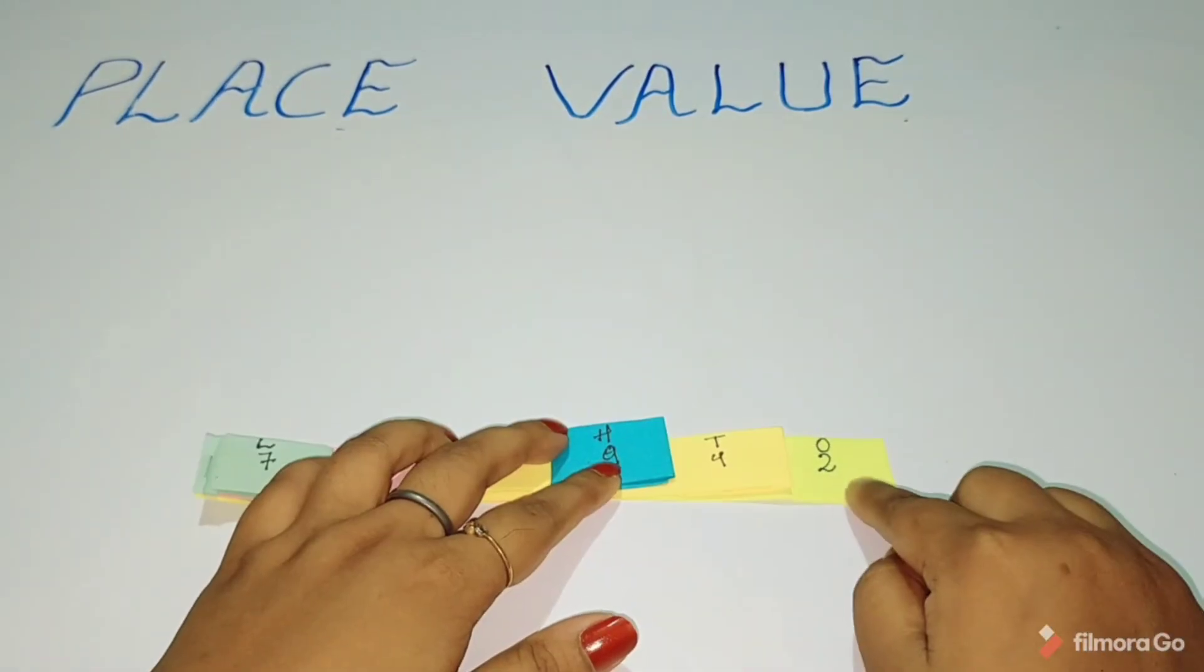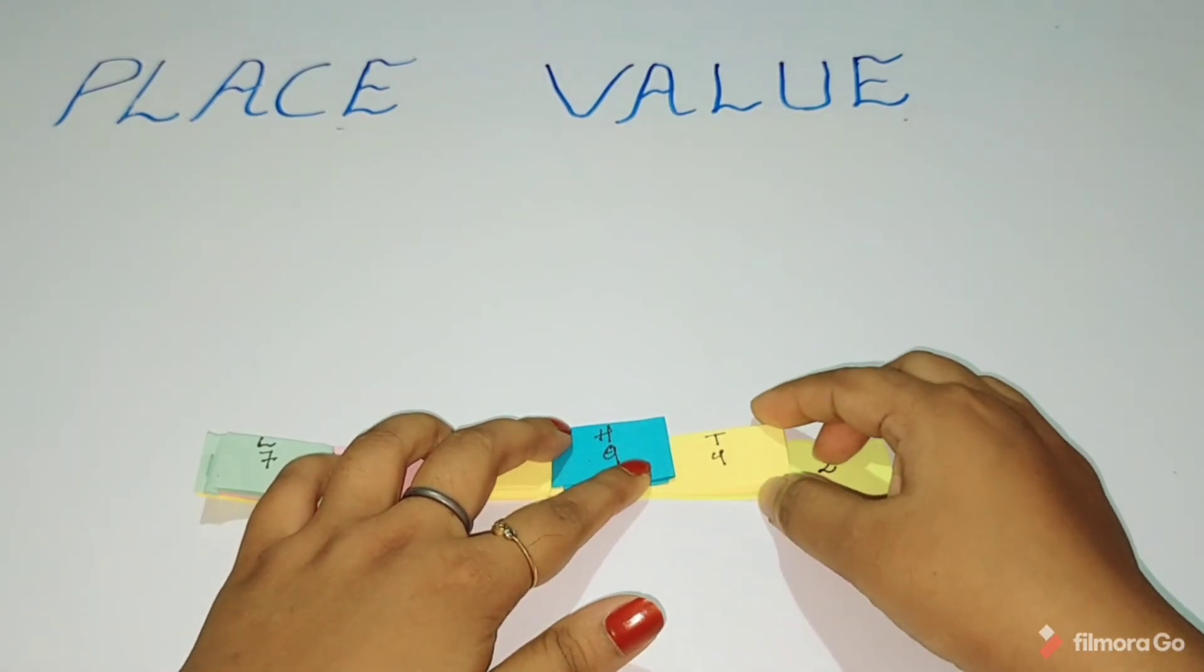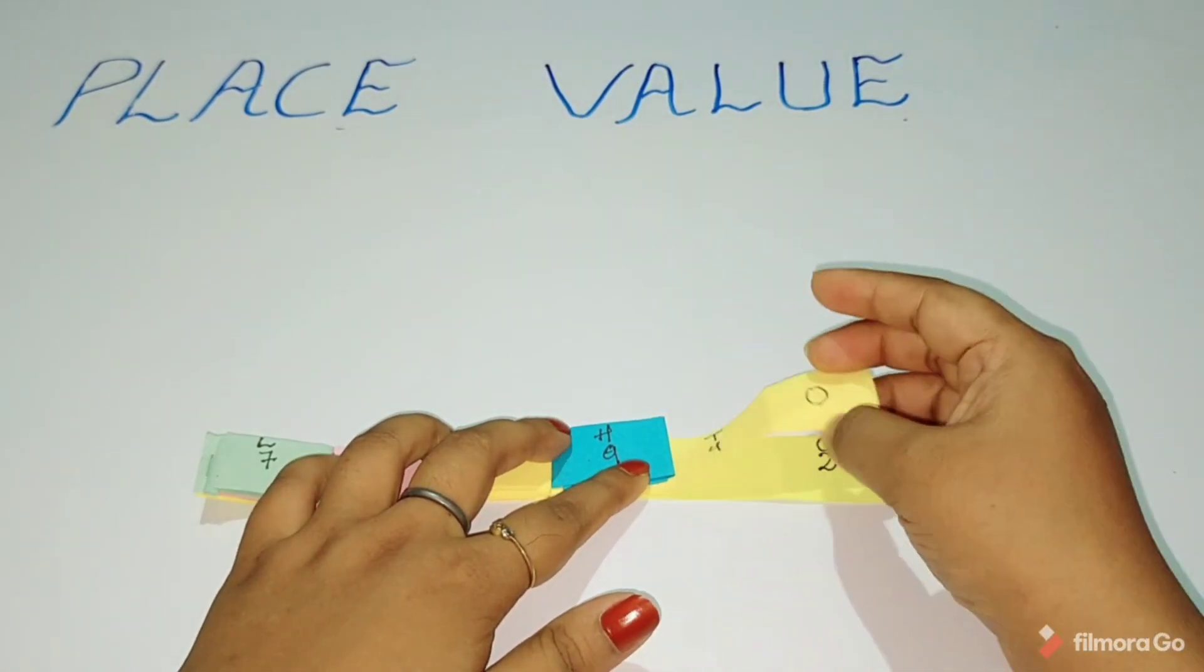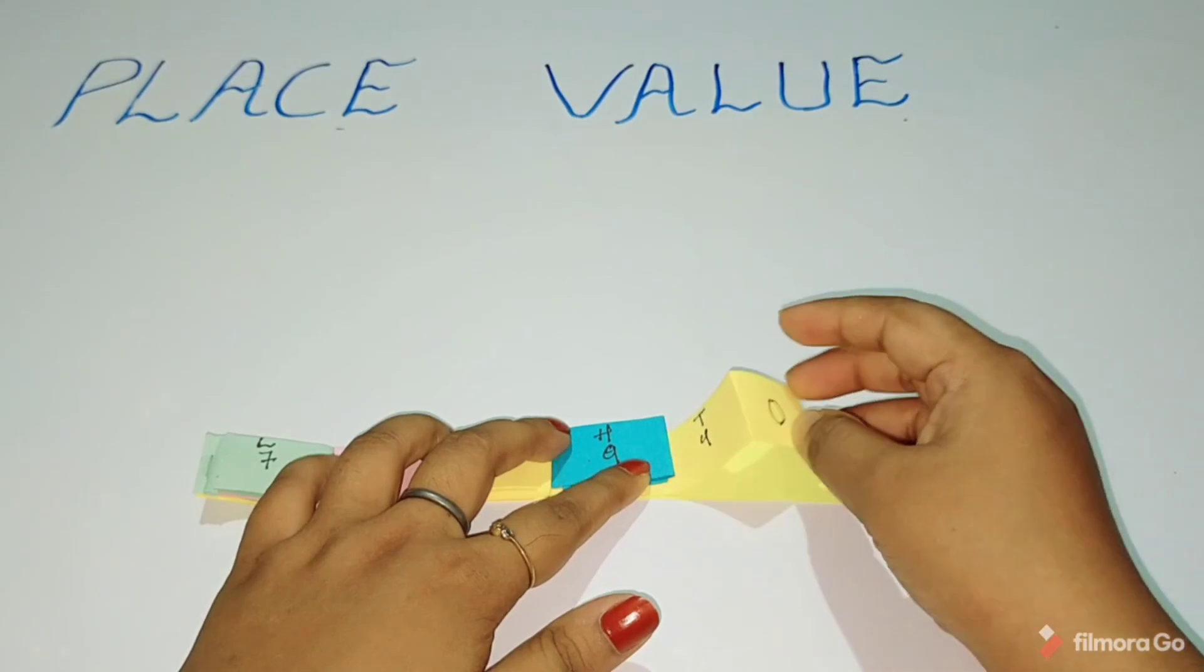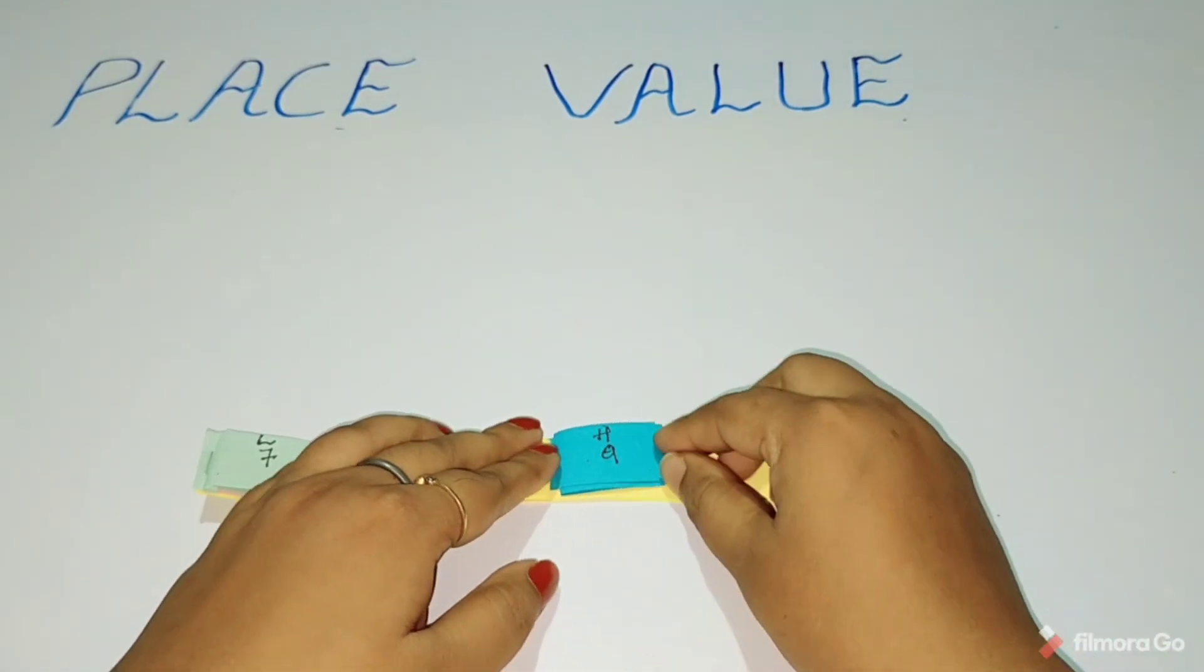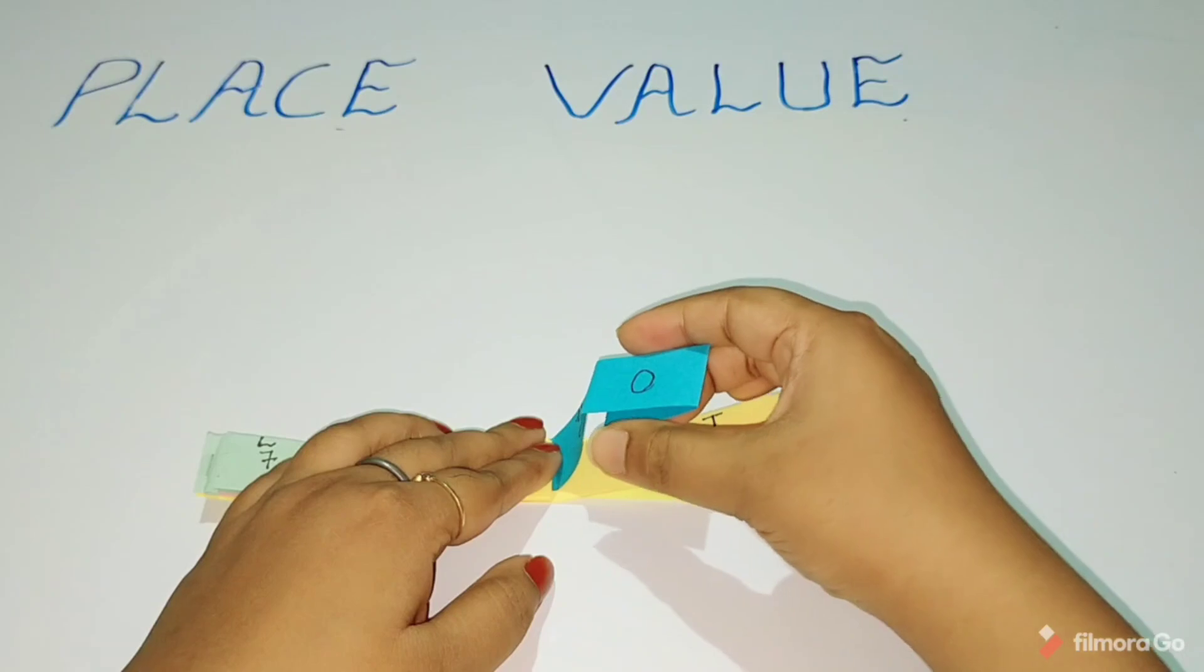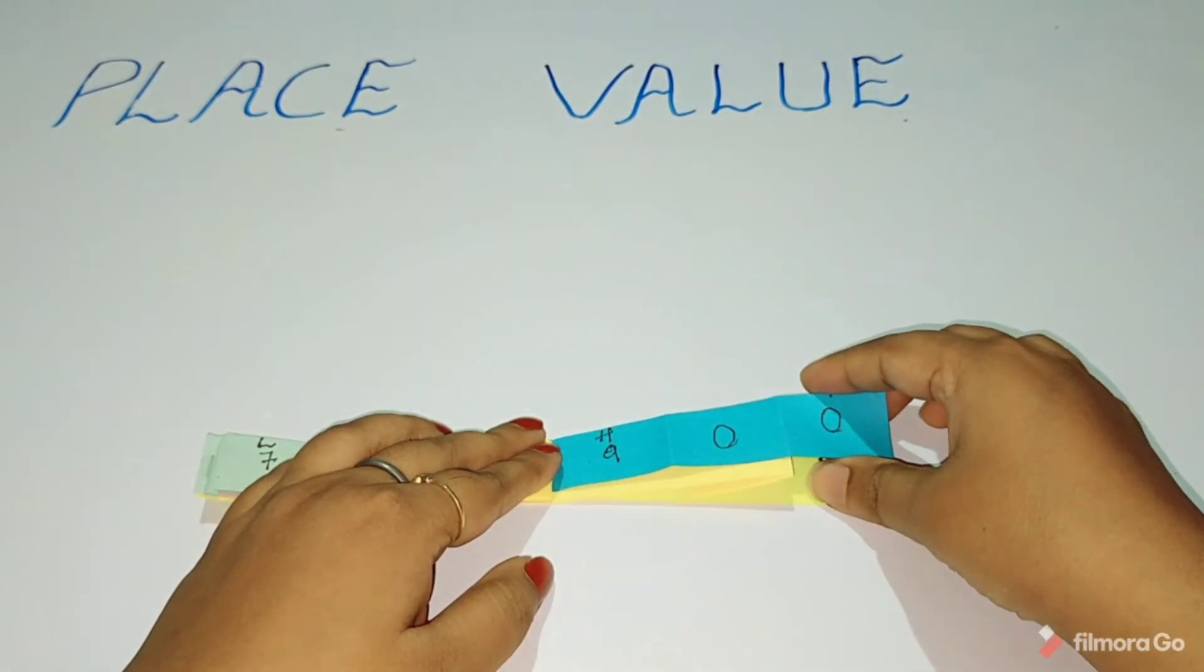In this number, two is at ones place and its place value is two. Four is at tens place and its place value is forty. Nine is at hundreds place and its place value is nine hundred.